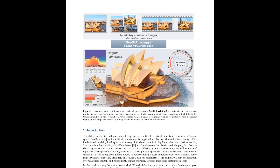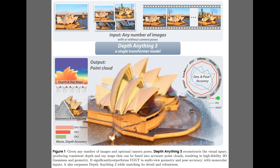Figure 1 presents the big promise. A single transformer turns any set of images into a coherent 3D understanding of the scene. The method predicts depth and ray maps, where a ray map gives the origin and direction of a viewing ray for each pixel, so geometry aligns across views. The large right panel shows the fused point cloud that results from these predictions. The small panels illustrate depth and rendering quality, while the circular chart indicates stronger geometry and pose accuracy than competing models.